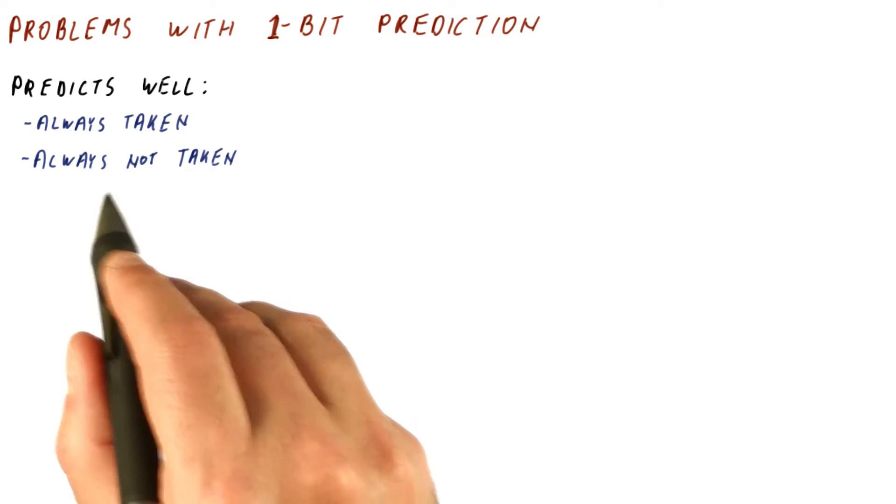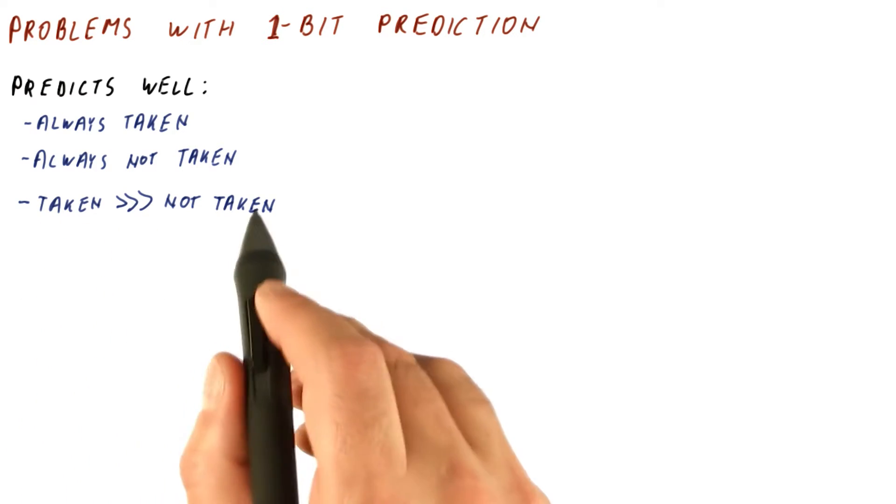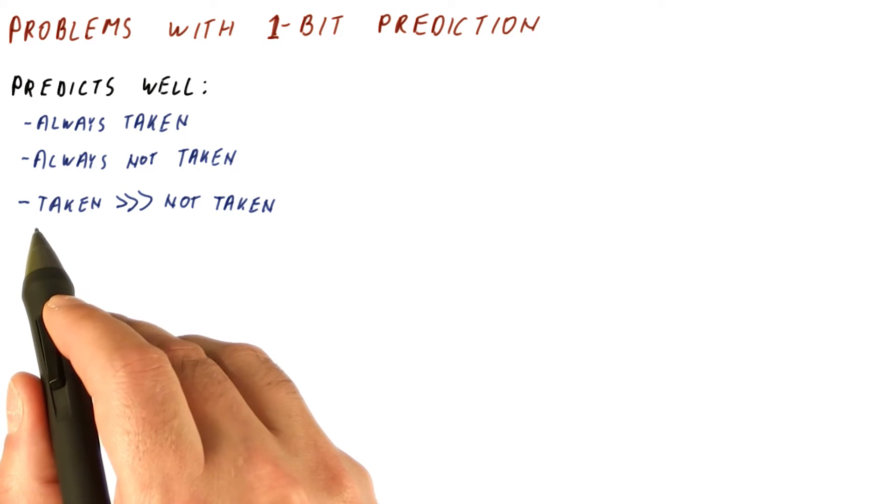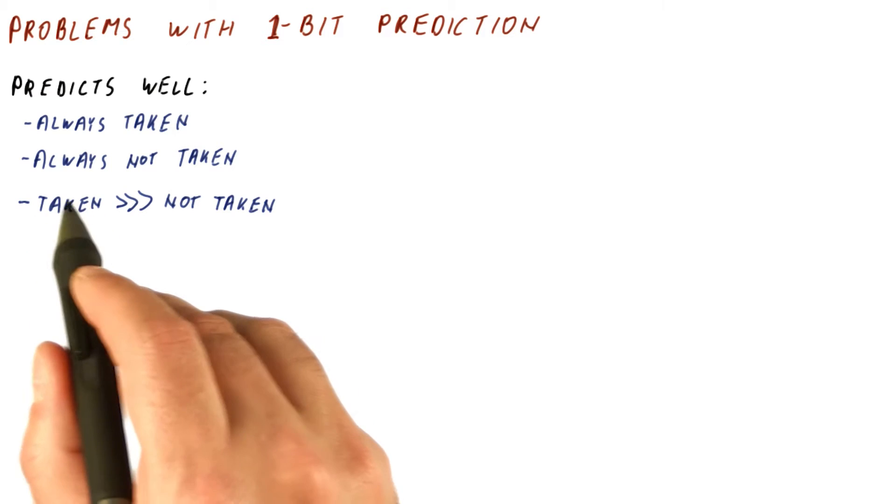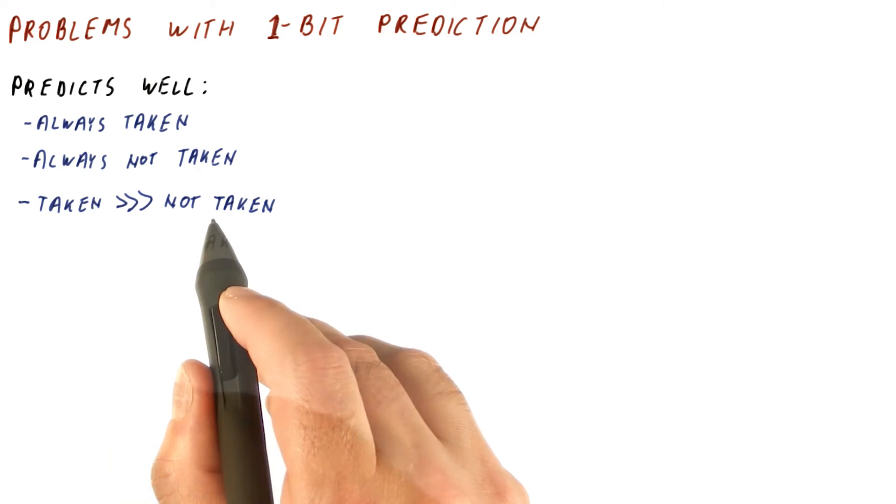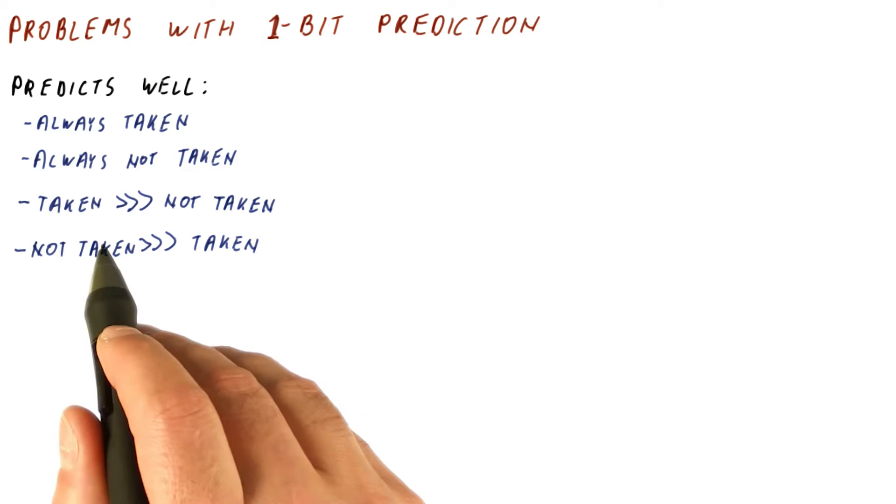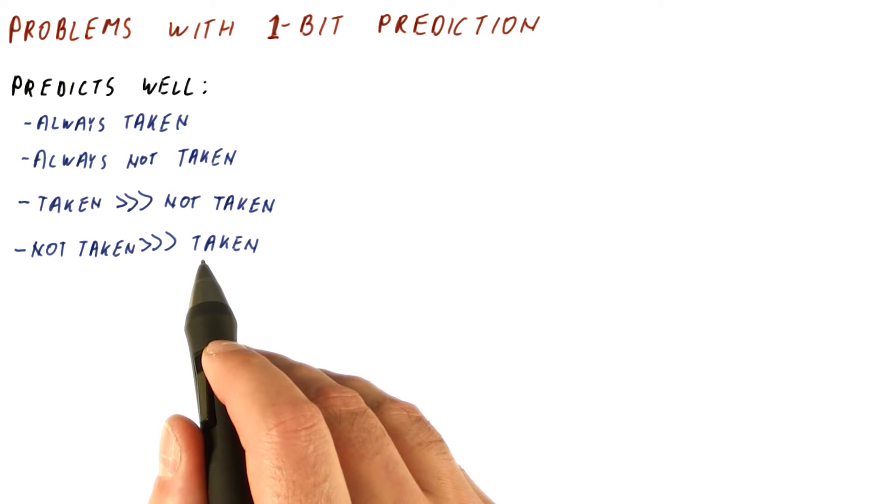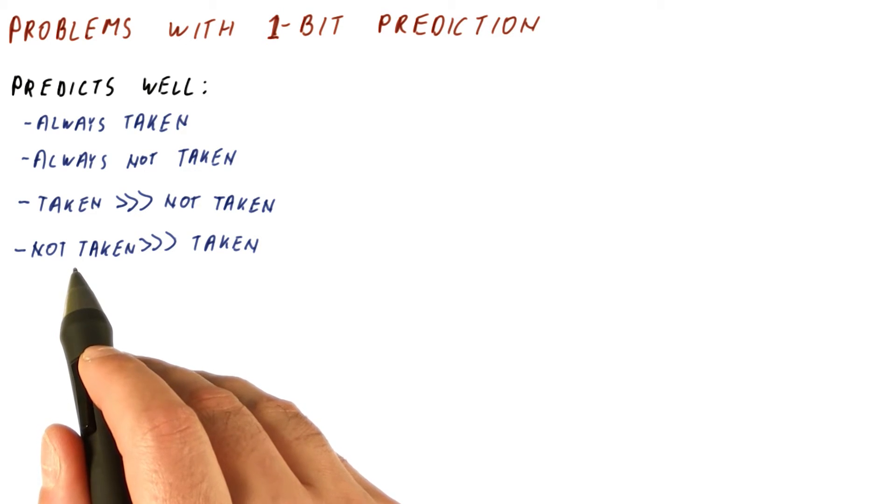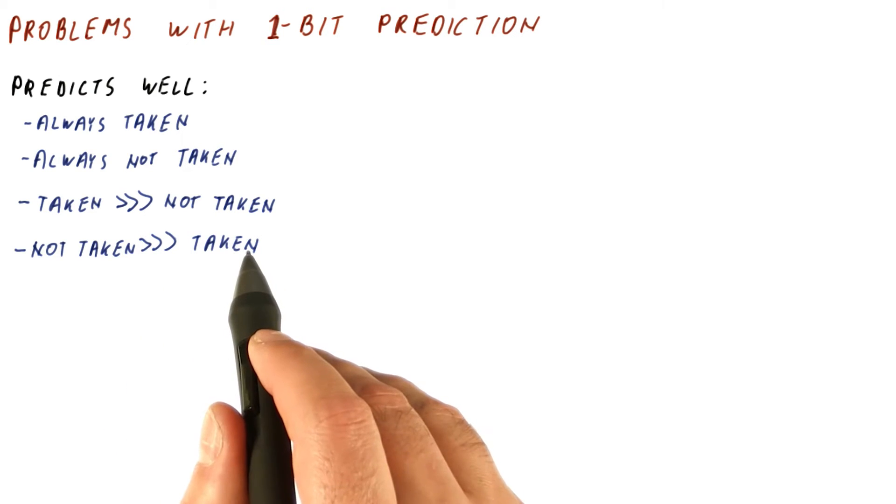So we just have the always not taken. It also predicts well the branches where the number of taken outcomes is vastly more than the number of not taken outcomes. Here, it's going to learn after the first taken outcome that the next outcome should be predicted taken, and very rarely it's going to be wrong because of a not taken outcome. Similarly, the one-bit predictor predicts well when the number of not taken outcomes is vastly more than the number of taken outcomes for the same reason. Basically, we will see not taken many times. The first time we see one of those, we're going to learn it, and then the taken outcome will be mispredicted.